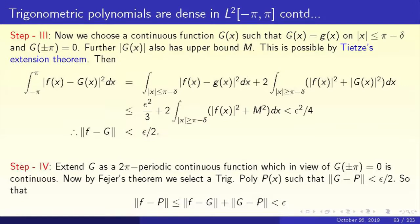In total, the L2 norm of f minus G is less than epsilon by 2. Finally, in Step 4, capital G is 2pi periodic since it vanishes at plus and minus pi, so it extends continuously on the whole real line as a 2pi periodic function. By Fejér's theorem this extension G can be approximated by a trigonometric polynomial P such that the L2 norm of G minus P is less than epsilon by 2. Then norm of f minus P is at most norm of f minus G plus norm of G minus P, and each piece is less than epsilon by 2, so the whole is less than epsilon.